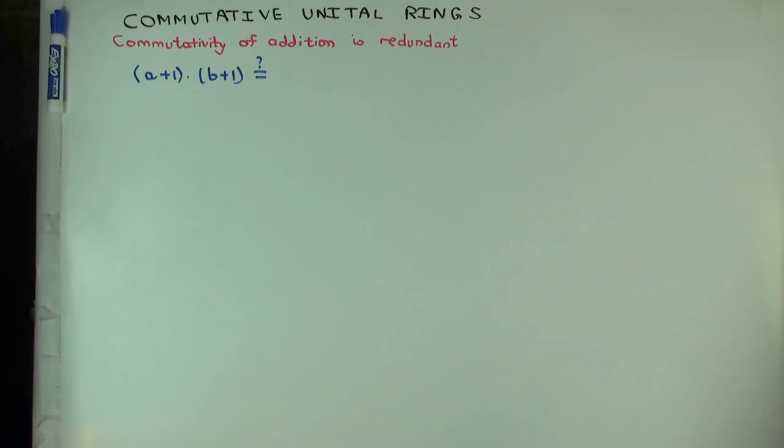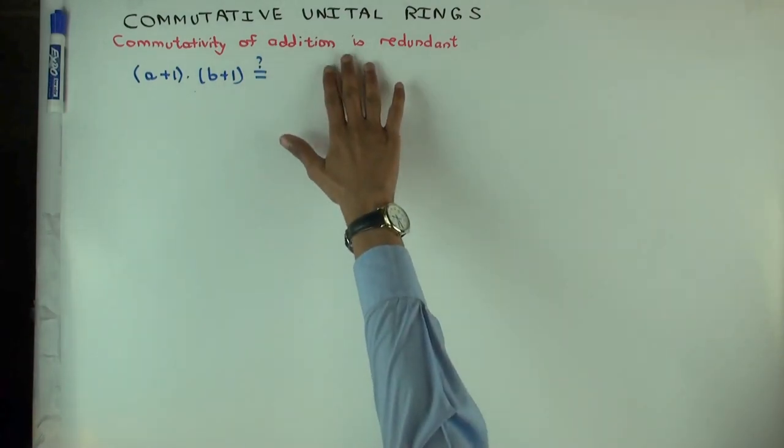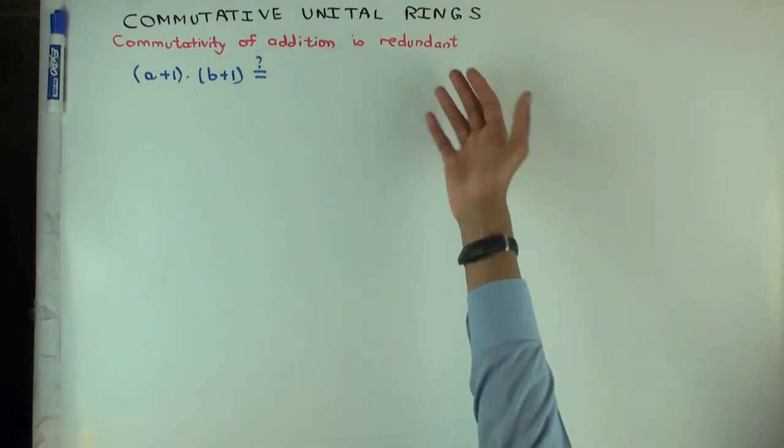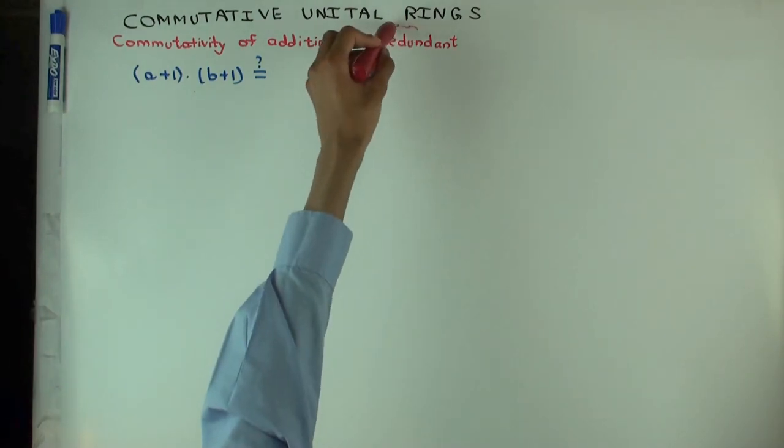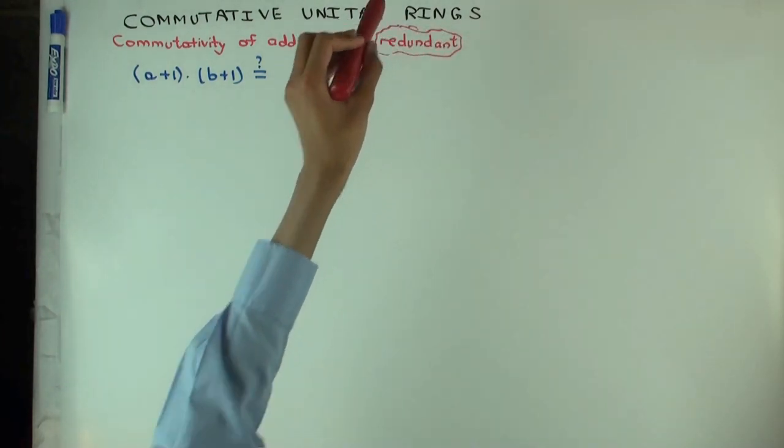Okay, so I'm going to first show that you can actually drop the assumption of commutativity of addition and in fact obtain it from the other conditions. So the right word for that is commutativity of addition is redundant. What do you mean by redundant? Not necessary.